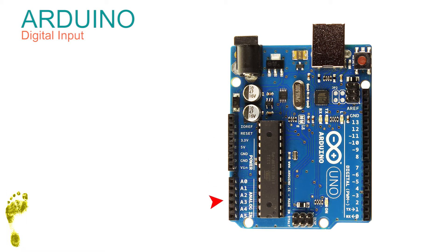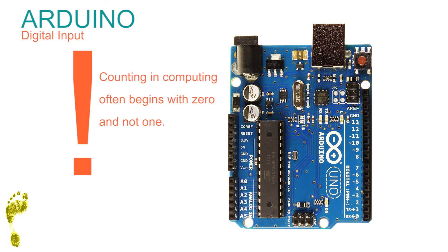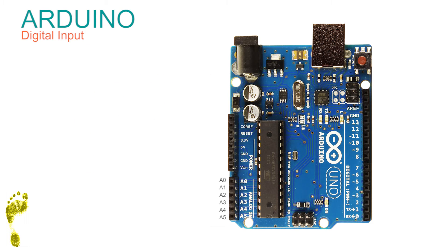The most important connections are the headers around the outside of the board. These are the six analog input pins — and here's something peculiar we often encounter in computing: at school we start counting at one, but in computing we start at zero. So the six analog pins are labeled A0, A1, A2, A3, A4, and A5. We'll see this unusual counting scheme again later.